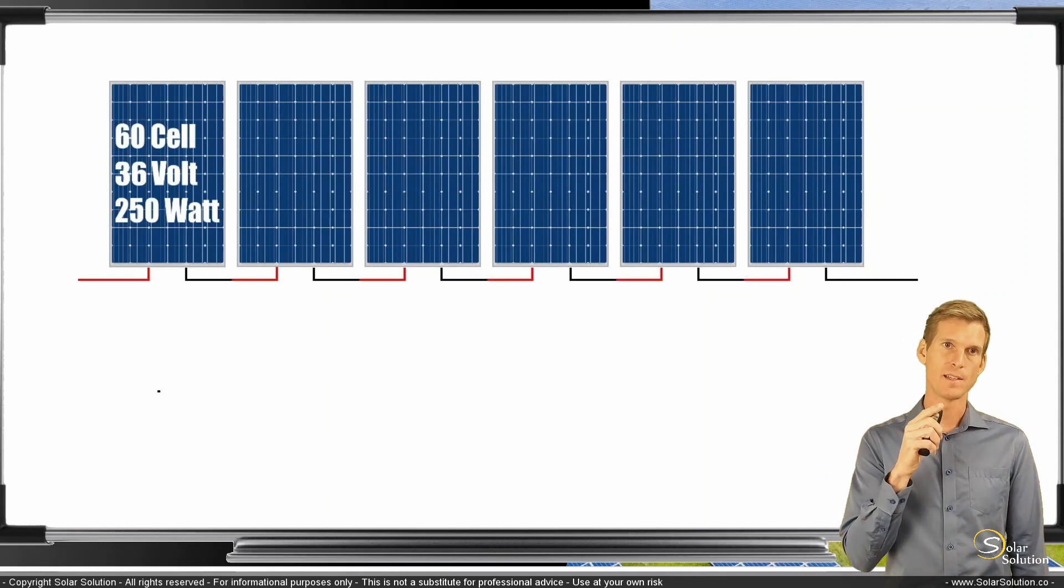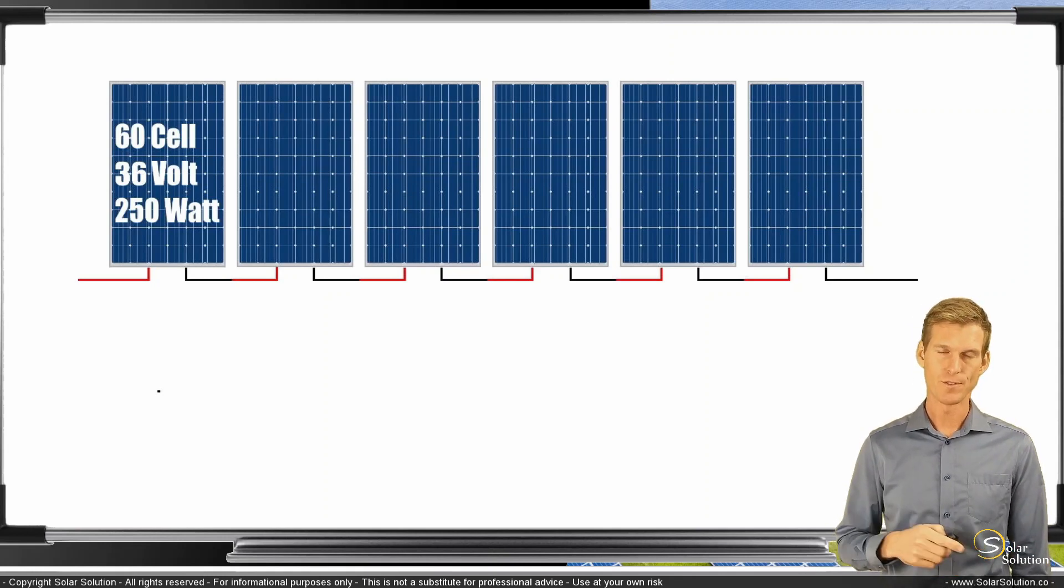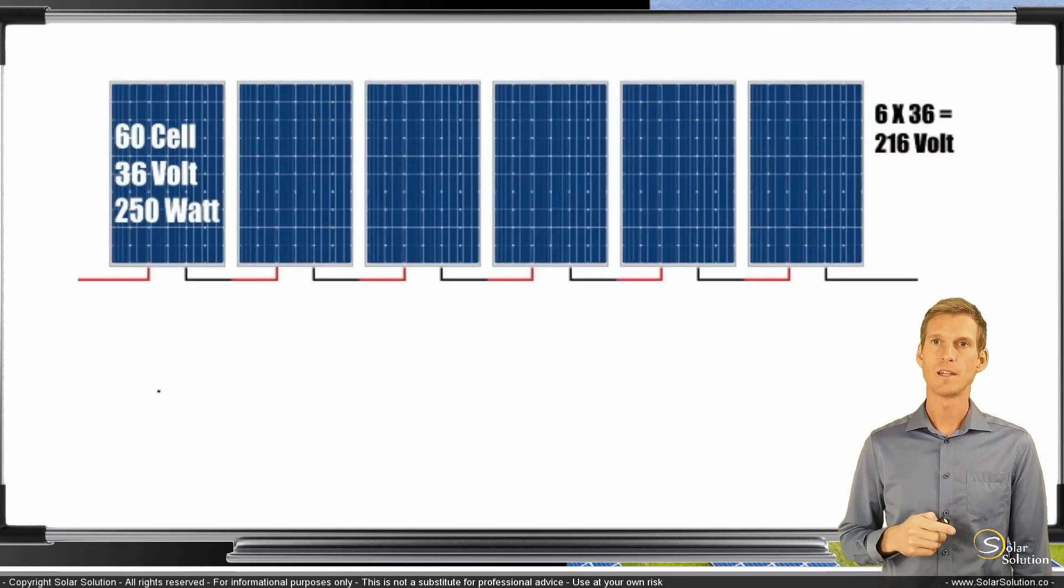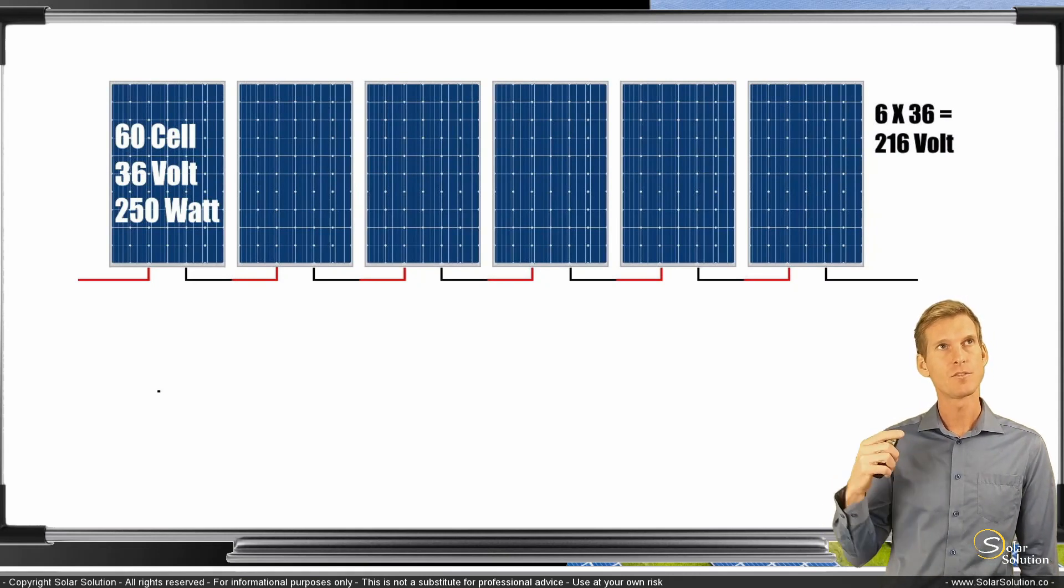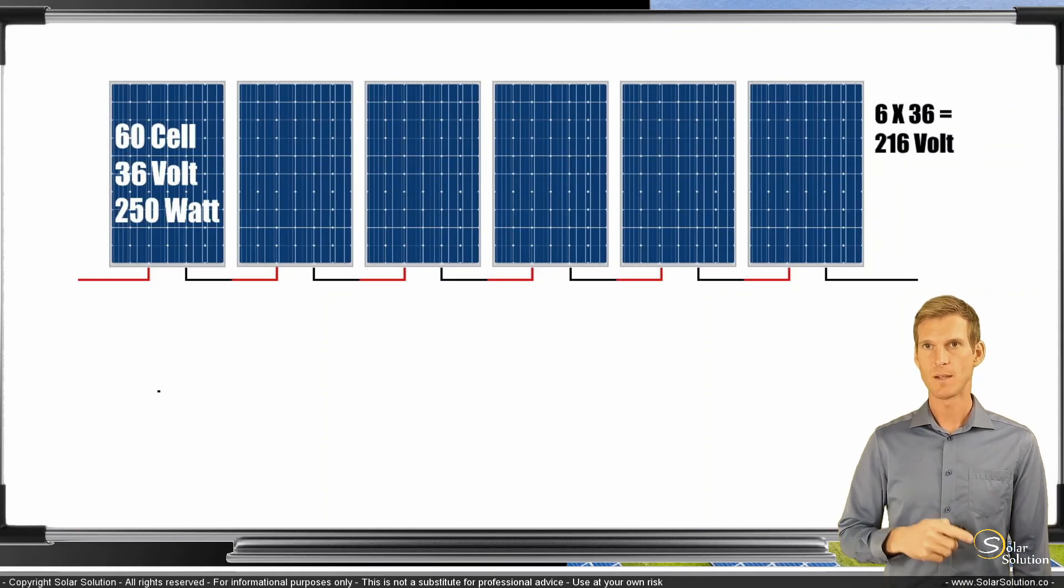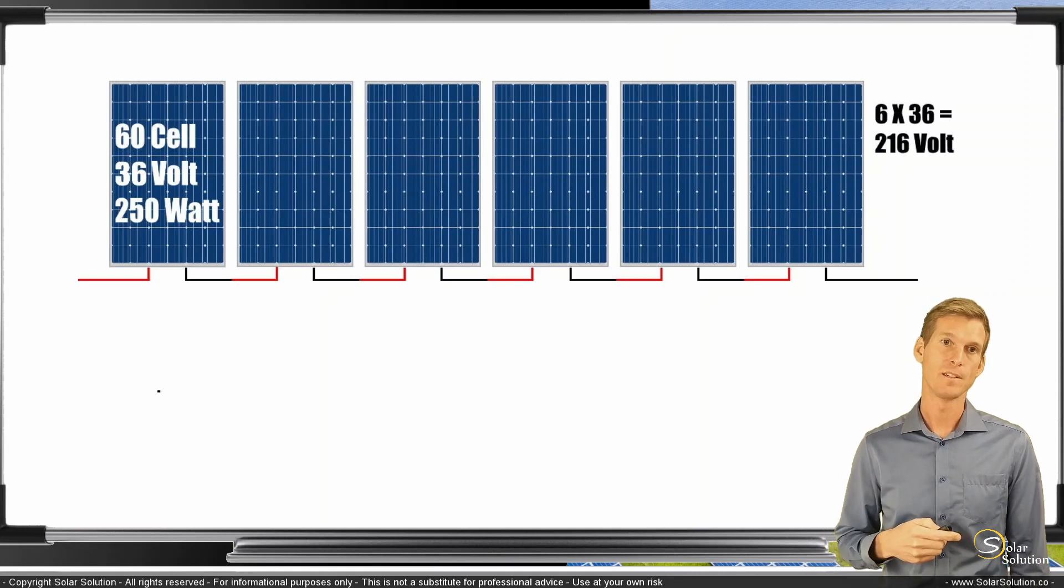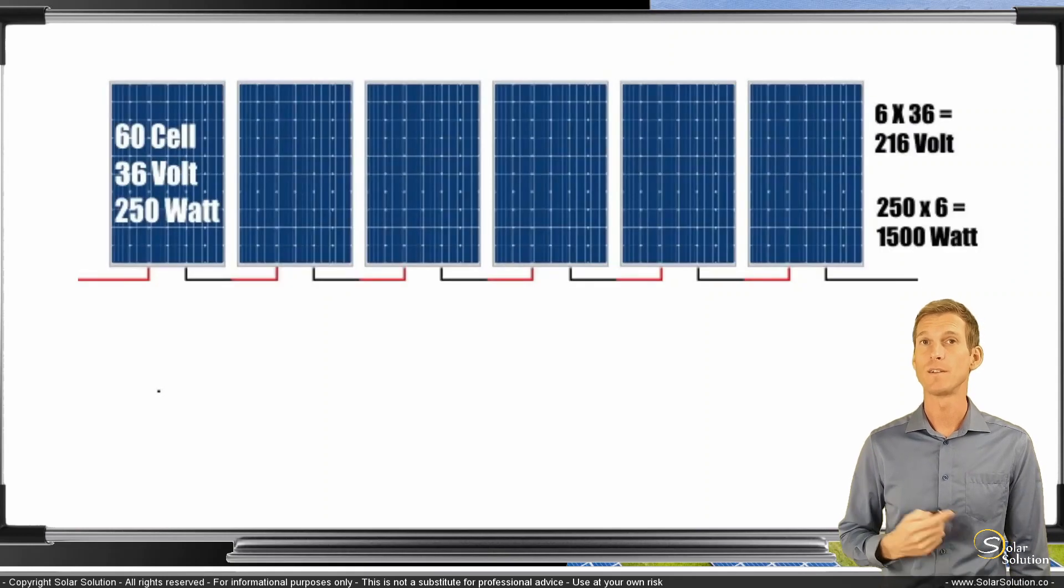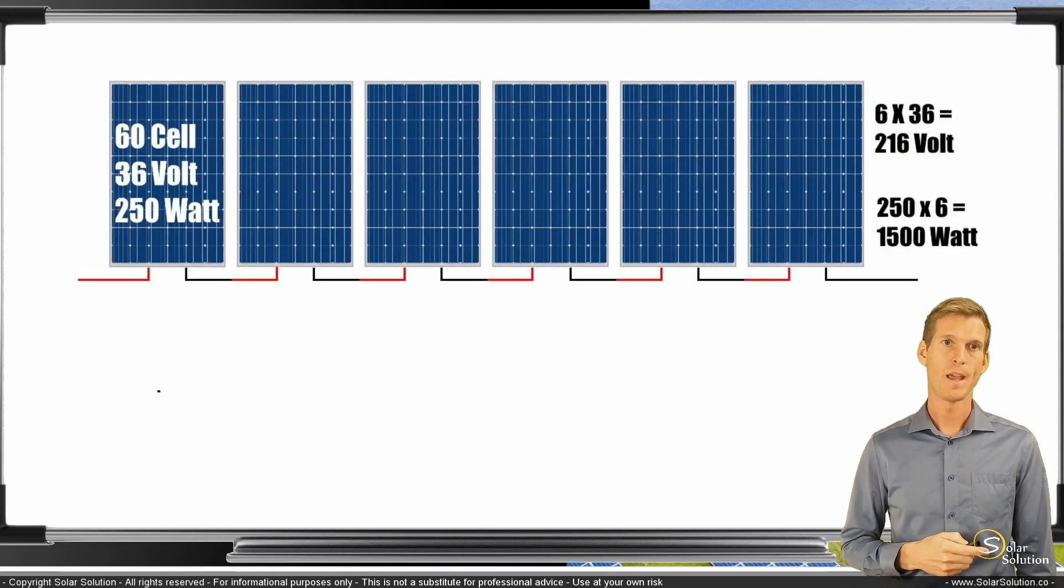then that one module that has 60 cells, 36 volts and 250 watts will produce an open circuit voltage, a theoretical open circuit voltage of 6 times 36 equals 216 volts. So the combined electrical pressure of the six panels combined in series is 6 times 36 is 216 volts. The combined power output of the six modules is 6 times 250 is 1500 watts. That makes sense, right? Six panels produce as much power as one panel.